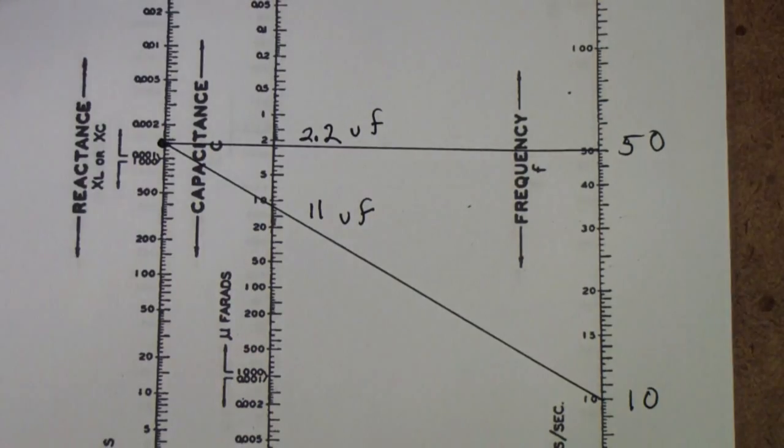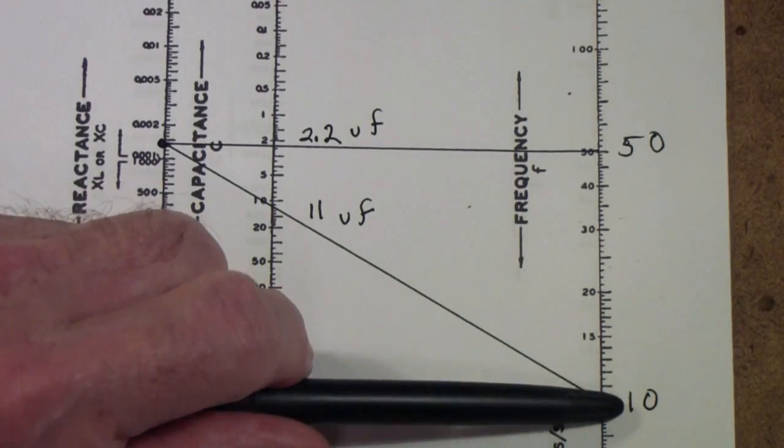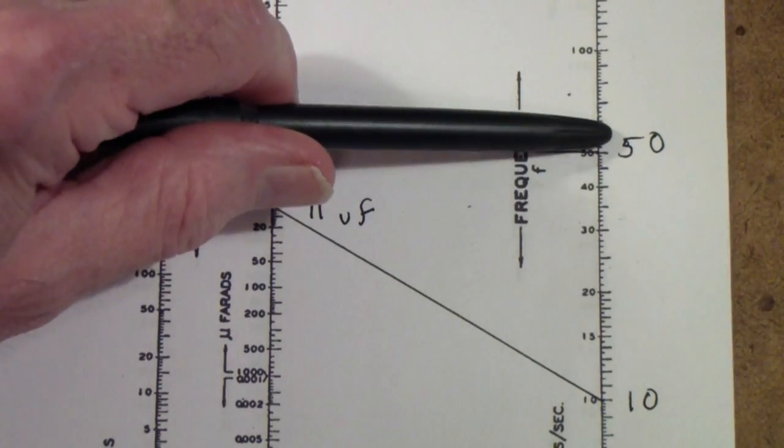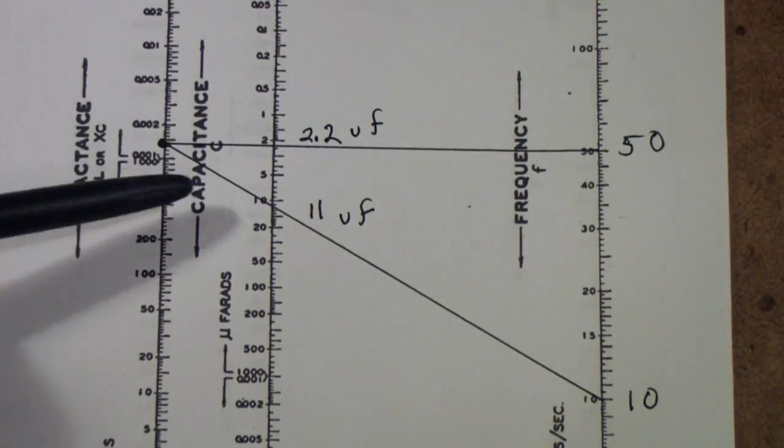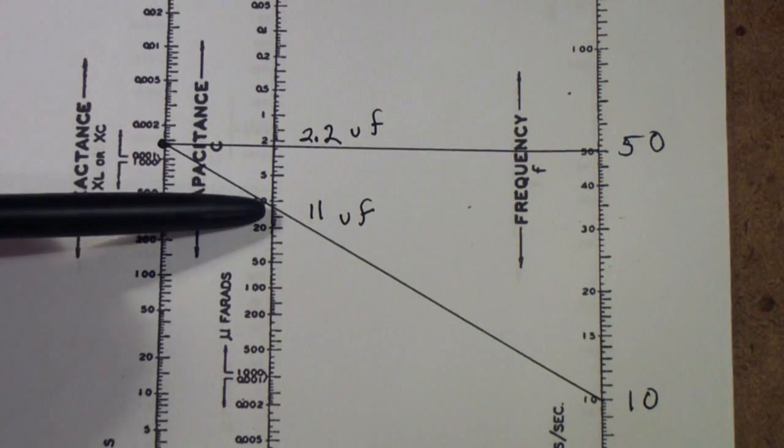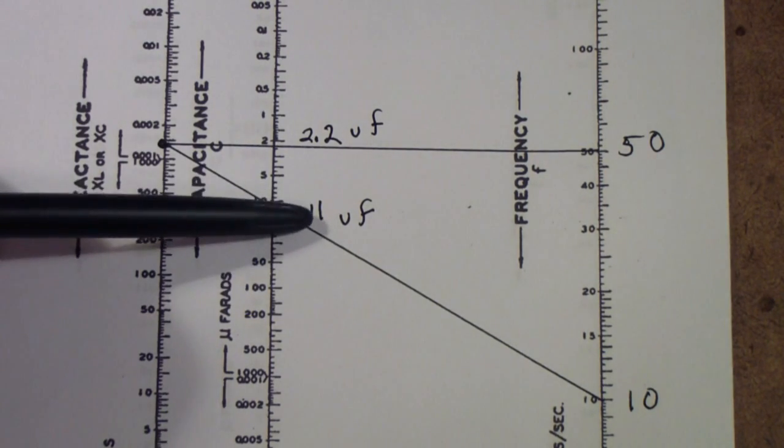We're going to choose two frequencies for an example. One is 10 cycles. The other is 50 cycles. So I've drawn a line from 10 cycles to 1.5k. And you see that it crosses this at about 11 microfarads.